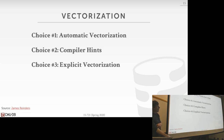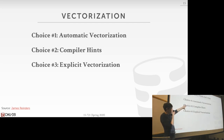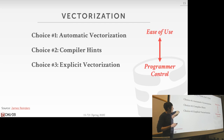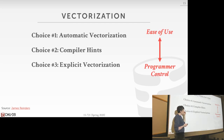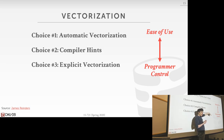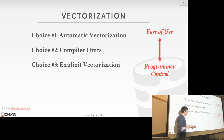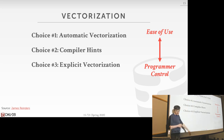There are three ways to achieve vectorization: automatic vectorization from the compiler, passing hints to the compiler, and writing explicit vectorization using CPU intrinsics. The easiest is hoping the compiler figures it out; the hardest gives complete control over what goes into registers and what instructions execute. It's a trade-off: easy to use versus better control but harder to write.